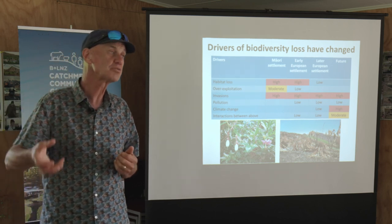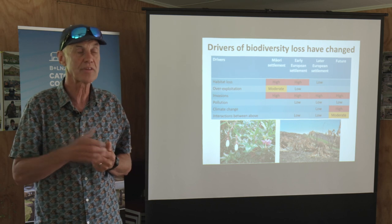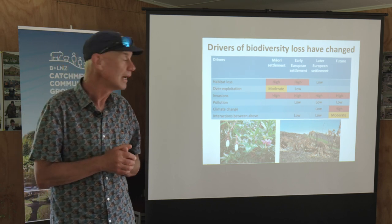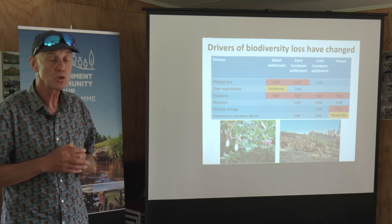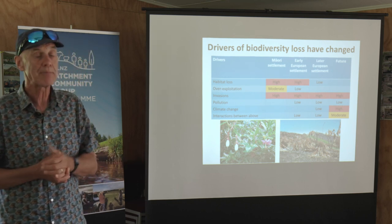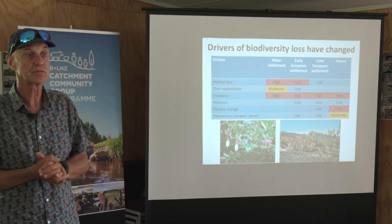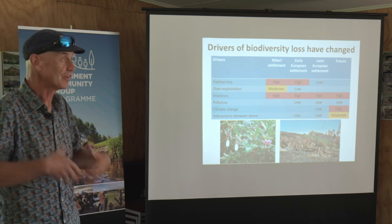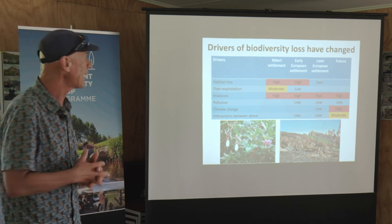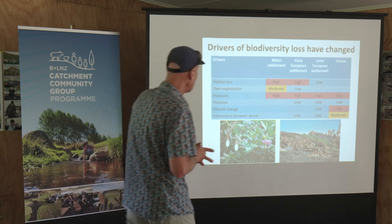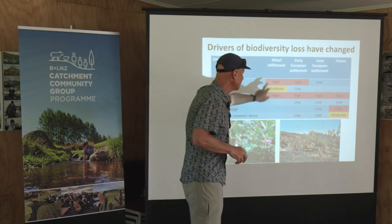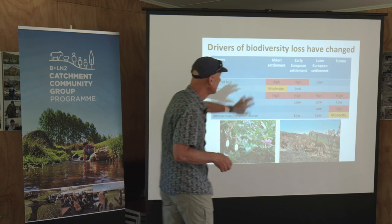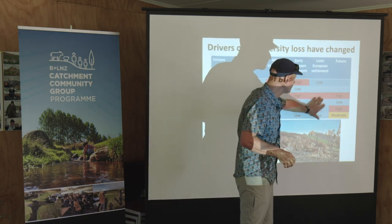With the Polynesians, when they arrived in New Zealand, they had kiore — the Polynesian rat — and they had the Polynesian dog, and those two things had a huge impact. When our Pākehā ancestors arrived, we had a whole raft of other species arriving in New Zealand, and those still continue to impact biodiversity today. We also had exploitation, particularly of birds like moa, during the period of Māori settlement.